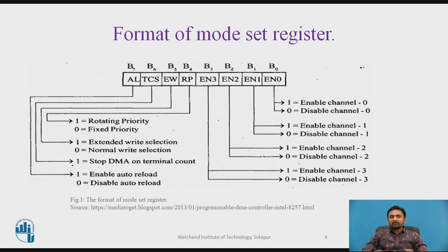To enable, disable, or perform any operation on the DMA channels, we have the mode set register. The format of the mode set register consists of a total of 8 bits, B0 to B7, and each individual bit performs a different function. Bits B0, B1, B2, and B3 are 4 consecutive bits used to enable or disable the channels DMA0, DMA1, DMA2, and DMA3 respectively.